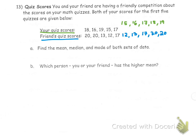Okay, so you've got your scores and you've got your friend's scores. We need to find mean, median, and mode. We're going to do this down at the bottom because there's not a whole lot of space.